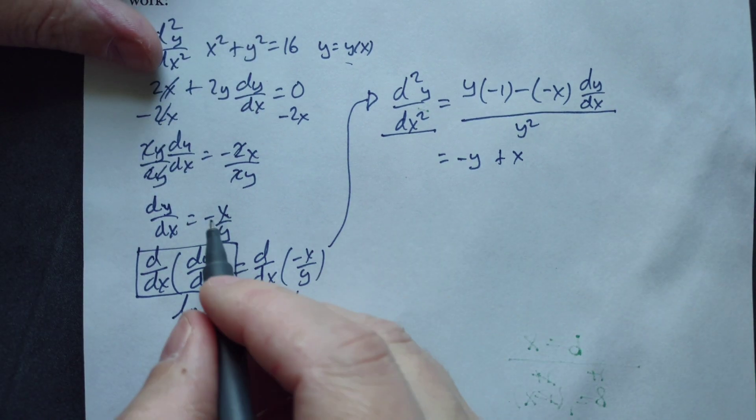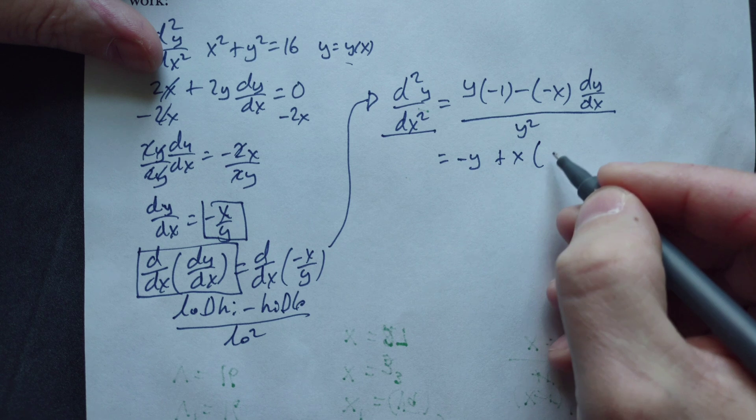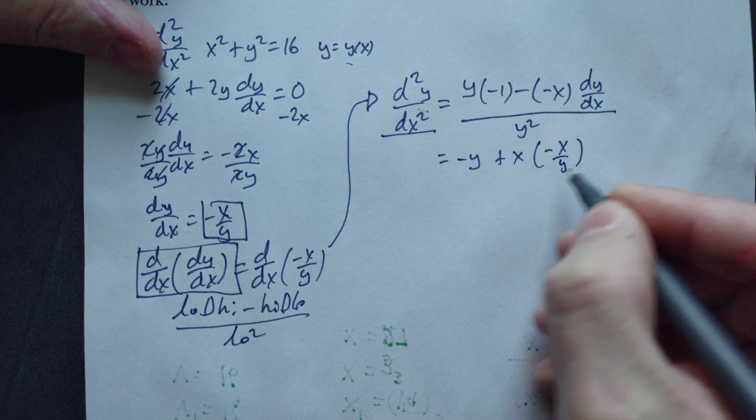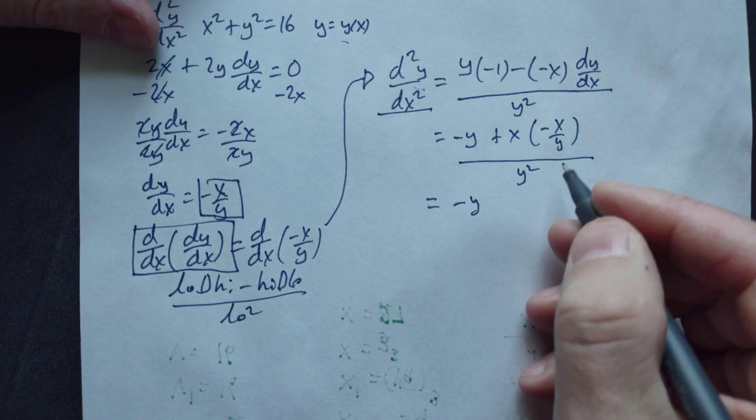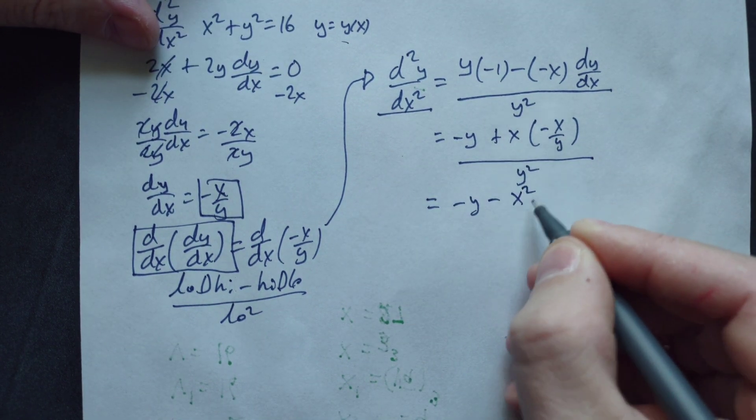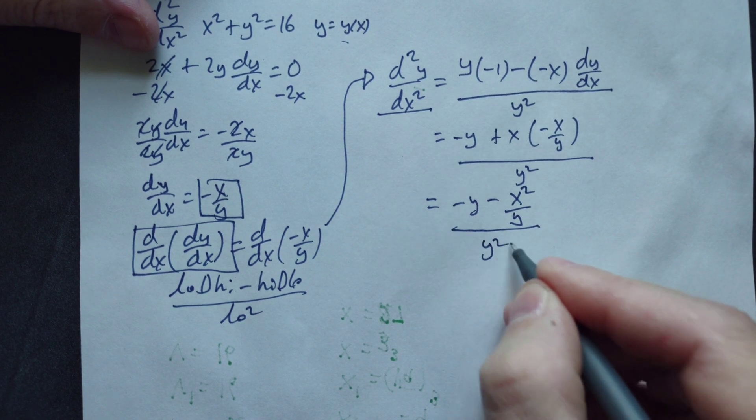We know dy dx right here is negative x over y. So put that in here, negative x over y. This whole thing is hanging over y squared, so negative y minus x squared over y divided by y squared.